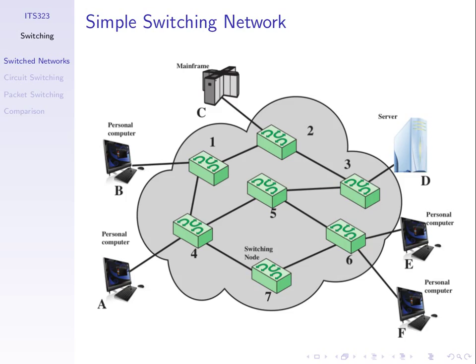Other times we may call it a host. We'll use the name station or host to mean the same thing — the devices that we want to allow to communicate. Because we don't have links between every pair of stations — for example station A and F, there's no cable directly linking them — to communicate between A and F we need to send via other devices. These other devices are shown as the green boxes and we can call them nodes or specifically switching nodes.